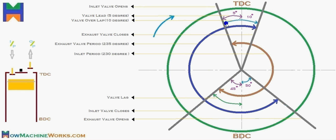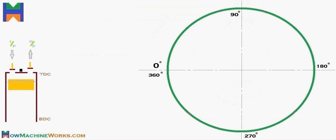This valve overlap spans 10 degrees, where both the inlet and exhaust valves are in the open condition simultaneously. That is how a valve timing diagram works and how valves practically operate in an engine.